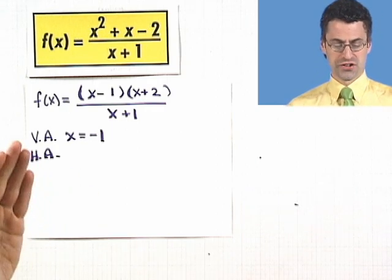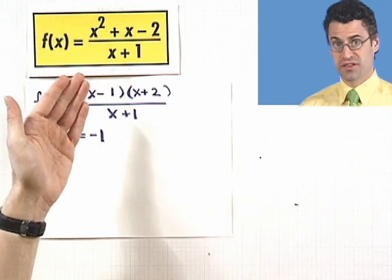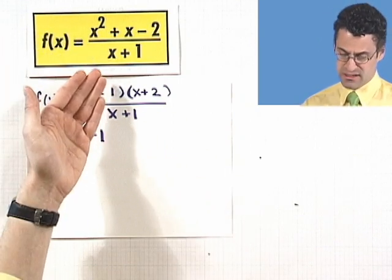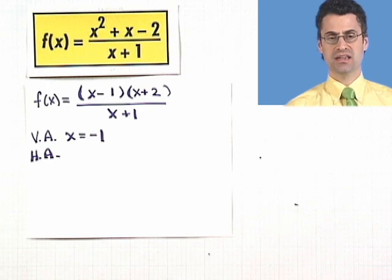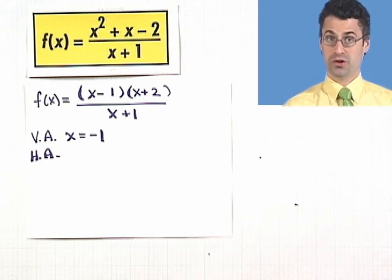If the degree of the polynomial in the numerator is greater than the degree of the polynomial in the denominator, as in this case, then in fact what you see is that this will have no horizontal asymptote.